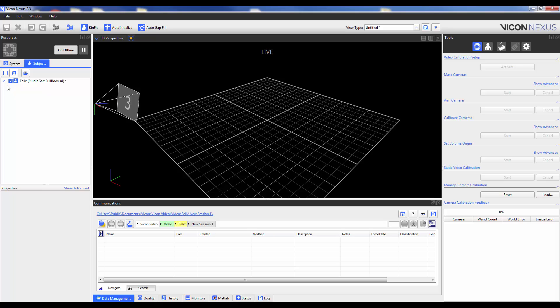To see the marker list, I am going to expand on the subject, and then expand on the marker list. Here I will see all the markers which comprise the template, and right now they are all in gray because none of the labels have actually been applied to any markers on the screen.